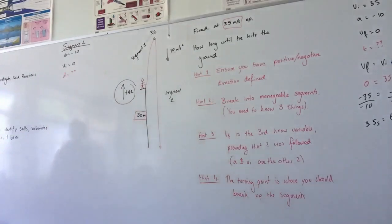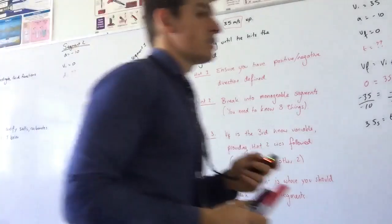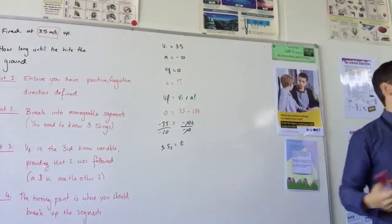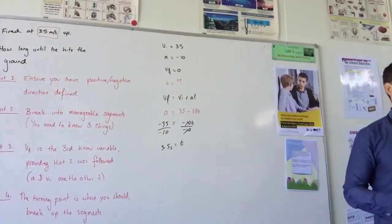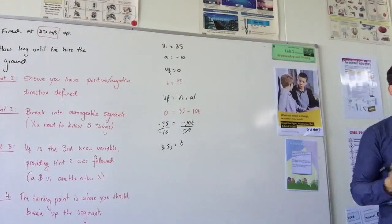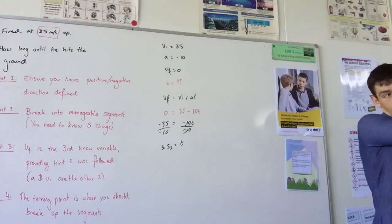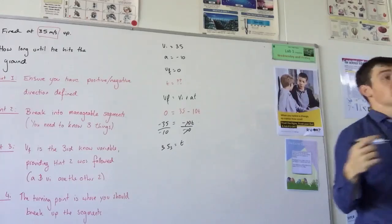Do we need to do segment two or are we going back to segment one? Going back to segment one. How do we find our distance? How many things do we know in segment one? Four. So we can pick whatever equation we want, providing it's got displacement in it. Which one do you want? You can't use speed times time because the speed's changing the whole time.